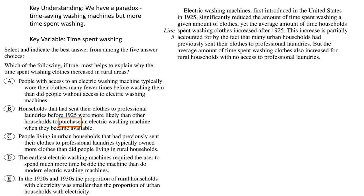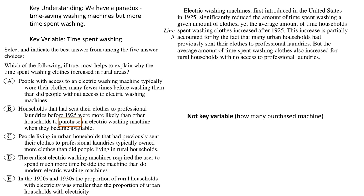Wrong answer B: households that had sent clothes to professional laundries before 1925 were more likely than other households to purchase an electric washing machine. This seems plausible, but there are two problems: it doesn't resolve the paradox for rural households, and the variable it discusses — how many people purchased the machine — is off-topic. What we were discussing was time spent washing, not purchasing behavior.